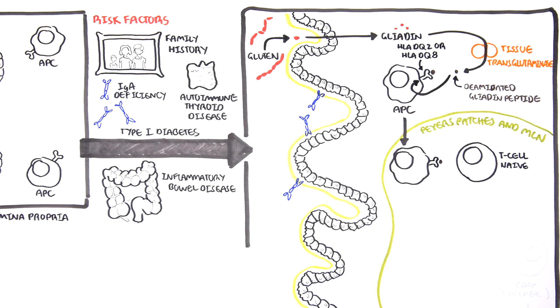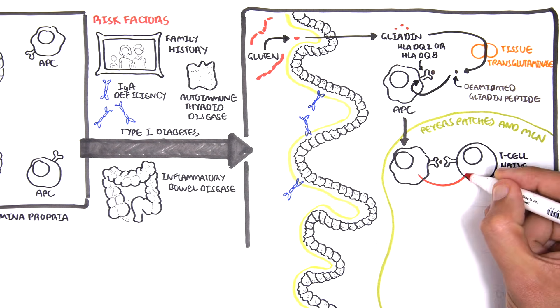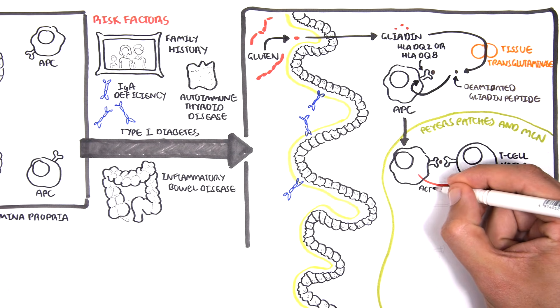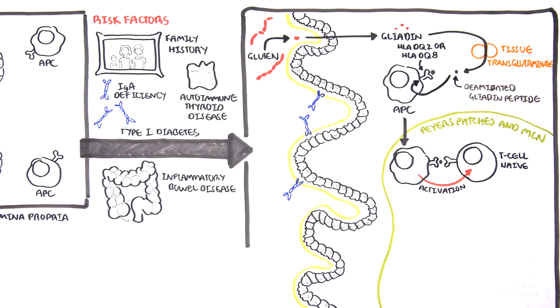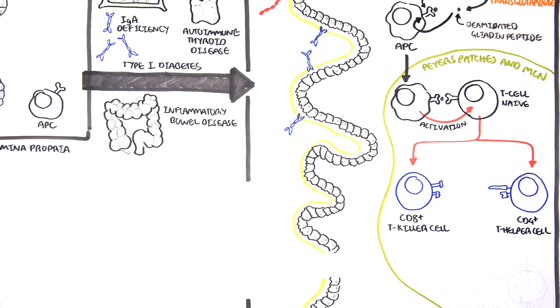And here, the antigen-presenting cell will present this gliadin peptide to the naive T cells. This contact will actually activate the naive T cells to become either CD8 T killer cells or CD4 T helper cells, depending on the cytokines and other factors. The naive T cells become either a T killer or a T helper cell, and these cells are now primed against the deaminated gliadin peptide.